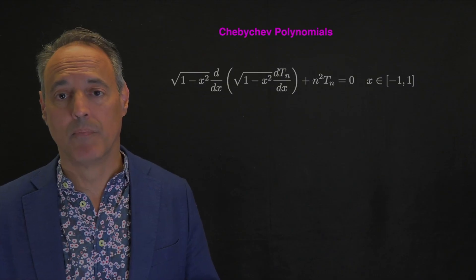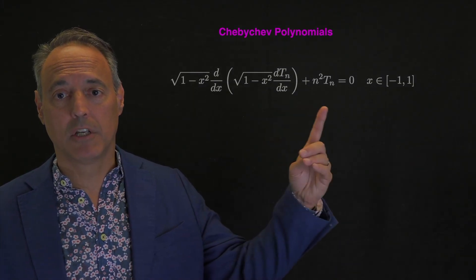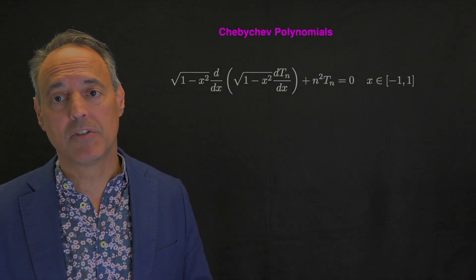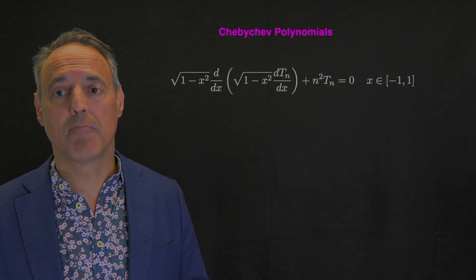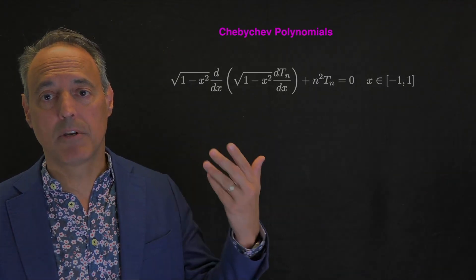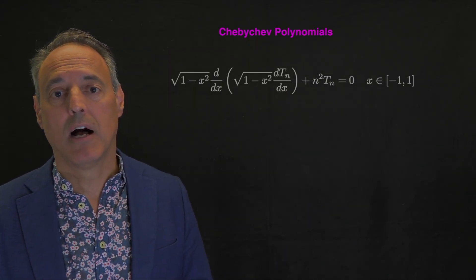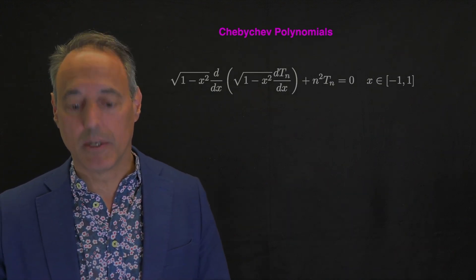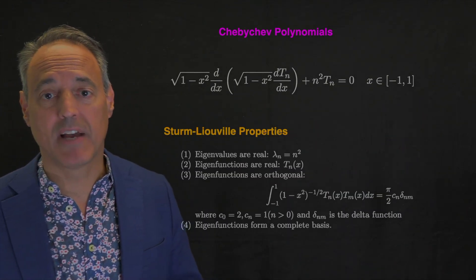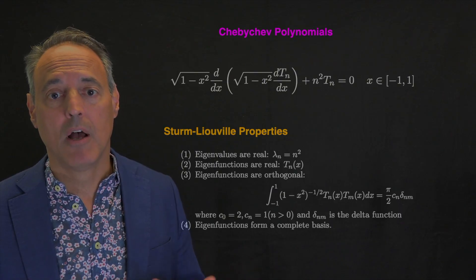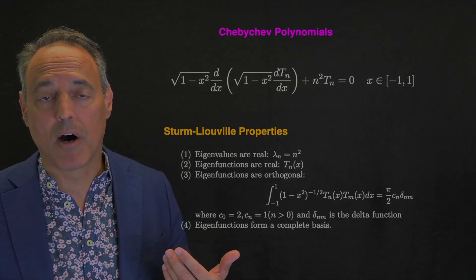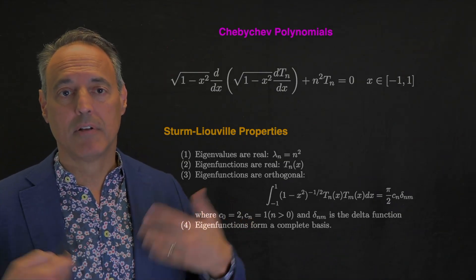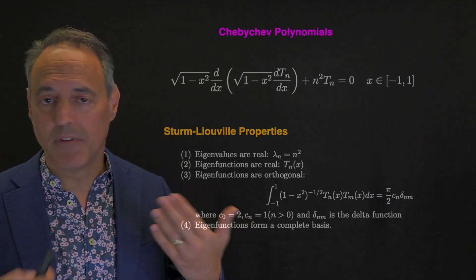It's an important class of spectral representations directly related to the cosine transform or Fourier transform. If you haven't heard of Chebyshev polynomials, here is the solution to a Sturm-Liouville problem. T_n are the Chebyshev polynomials, which satisfy this eigenvalue problem on domain negative one to one.